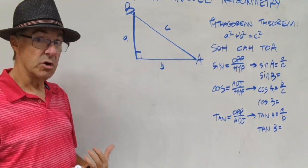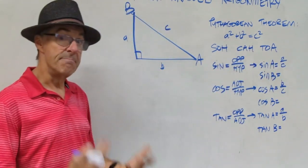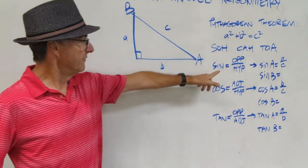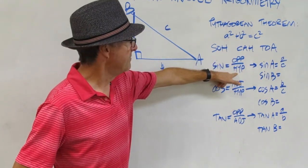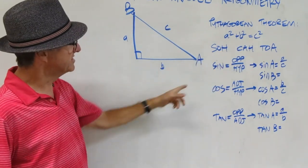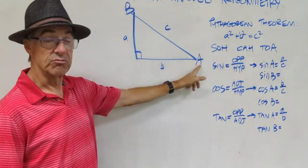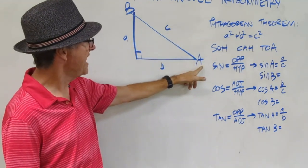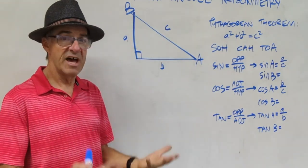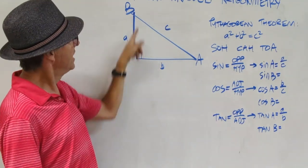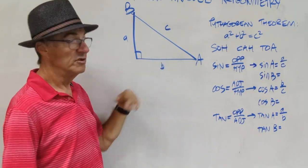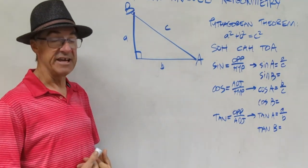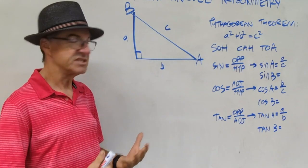We start with SOHCAHTOA trigonometry — that's the mnemonic you can use to help remember the three ratios. The first one, sine, is opposite over hypotenuse. That's the SOH. Sine of angle A is the ratio of the opposite side over the hypotenuse, so sine A equals A over C. It's just whatever length that side is divided by the hypotenuse, giving you some decimal number. That is sine A.